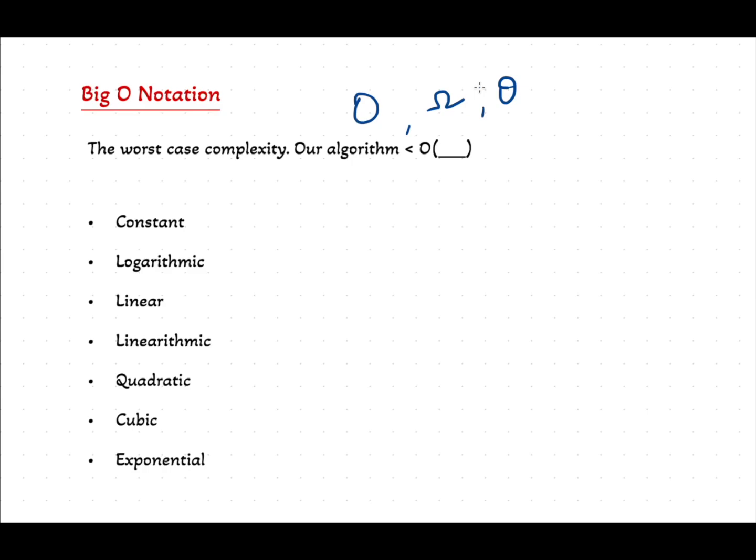Now let's quickly run through some of the common time complexities you'll see in your coding problems. We have constant, which is O(1) usually for performing basic operations, logarithmic O(log n) for things like binary search, linear O(n) for looping over elements in an array, linearithmic O(n log n), quadratic O(n²), cubic O(n³), exponential O(2^n).